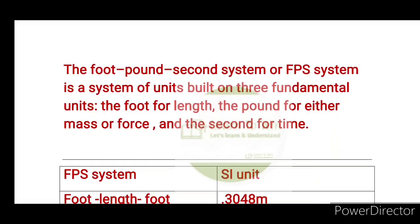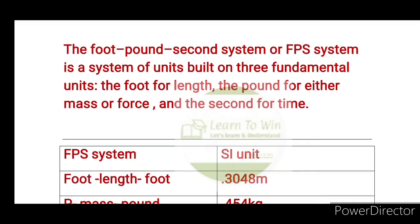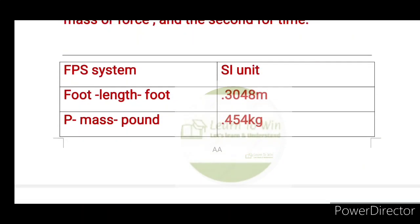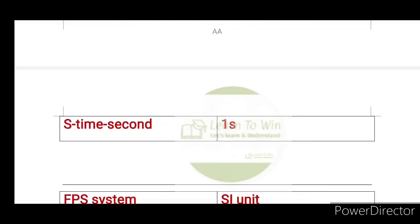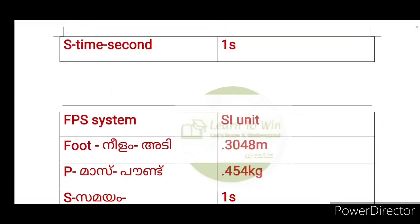The FPS system — the Foot-Pound-Second system — is a system of units built on three fundamental units: foot for length, pound for mass, and second for time. Foot: 1 foot is 0.3048 SI units (meters). Pound: 1 pound is 0.454 kg. Second: time in second.